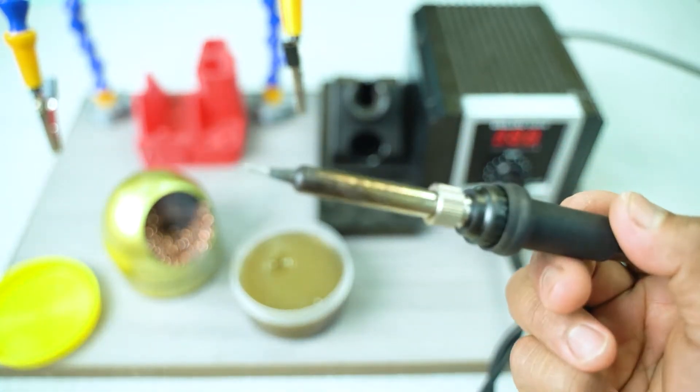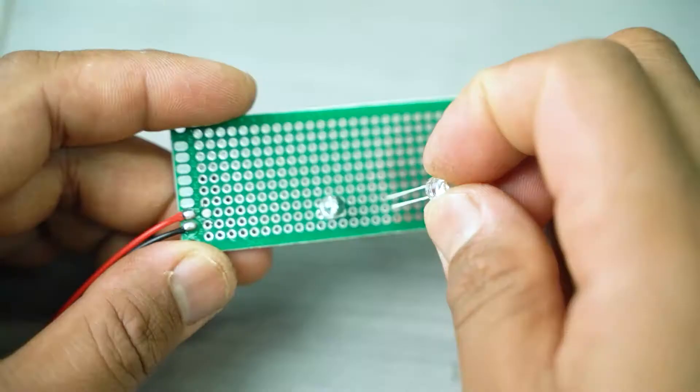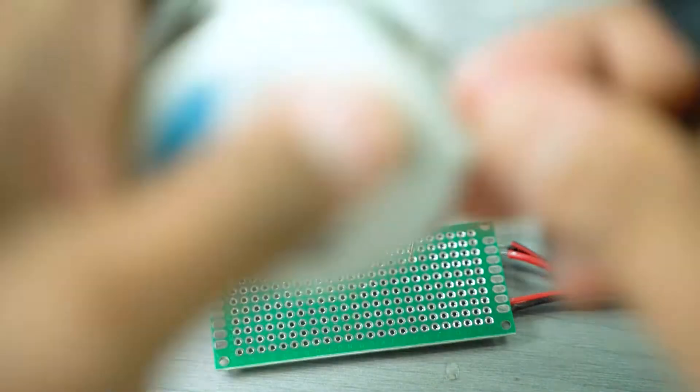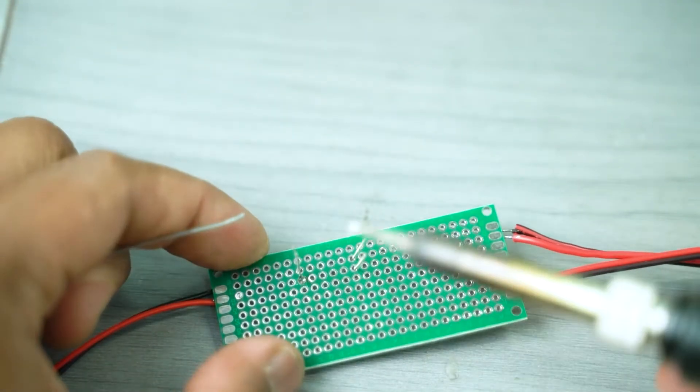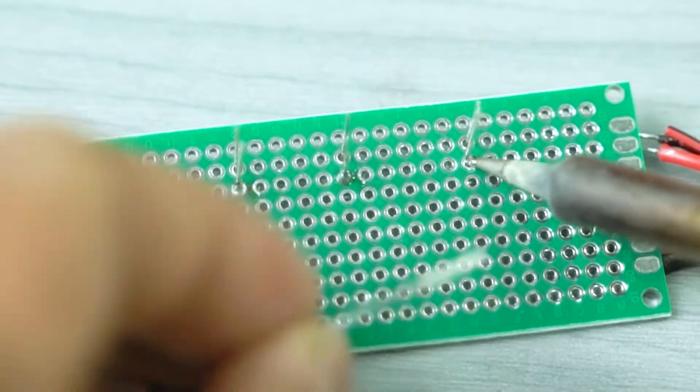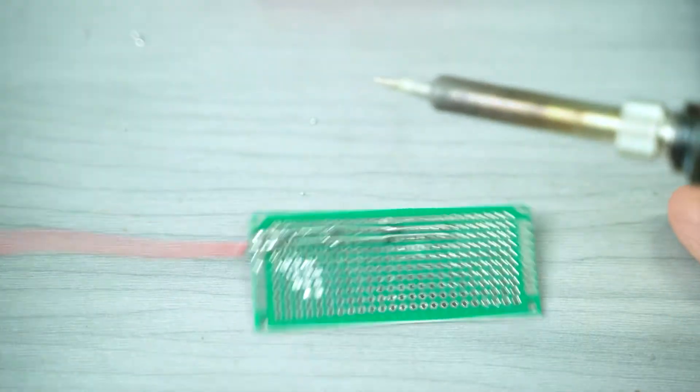Try to practice your soldering skills by making something like this LED light on a circuit board. Soldering is not hard. Just take time to practice and you will become better.